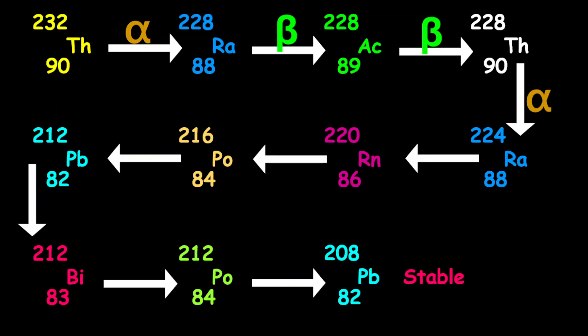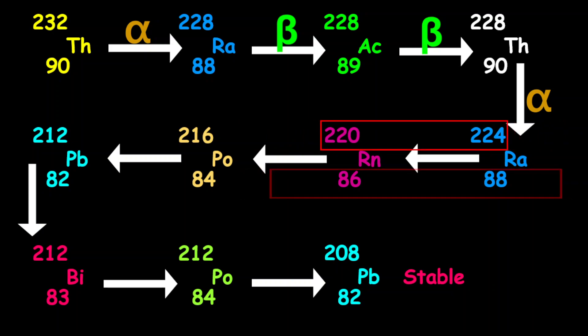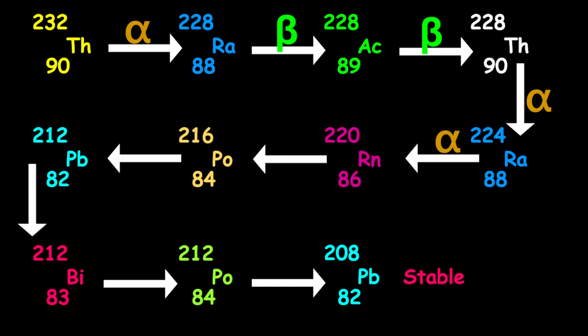Moving from radium-224 into radon-220, the mass number decreased by 4 and the proton number decreased by 2, therefore this is another alpha decay.